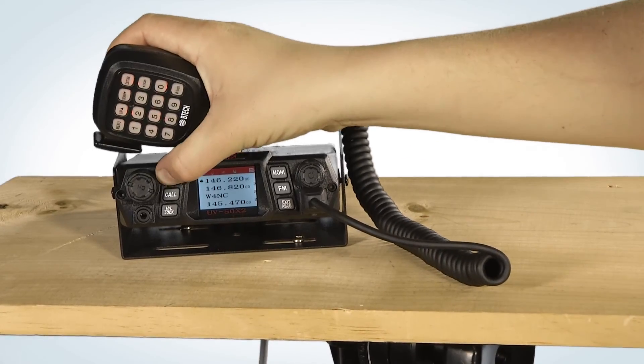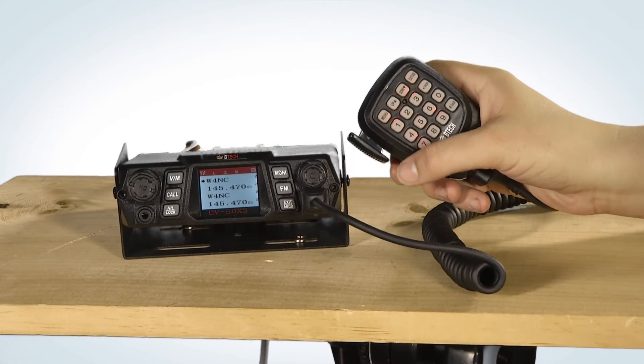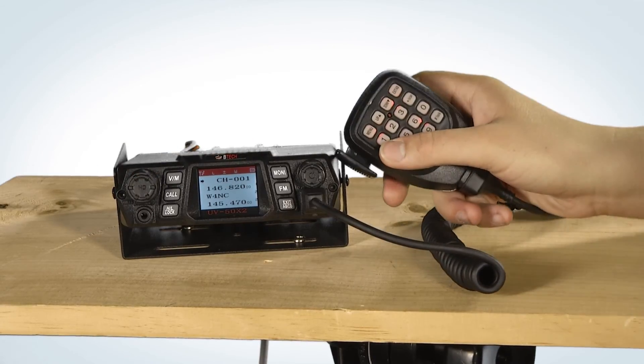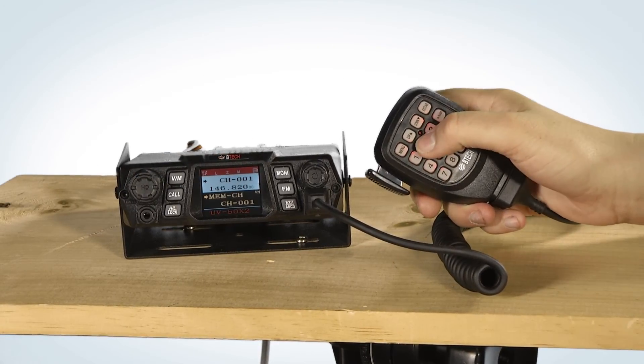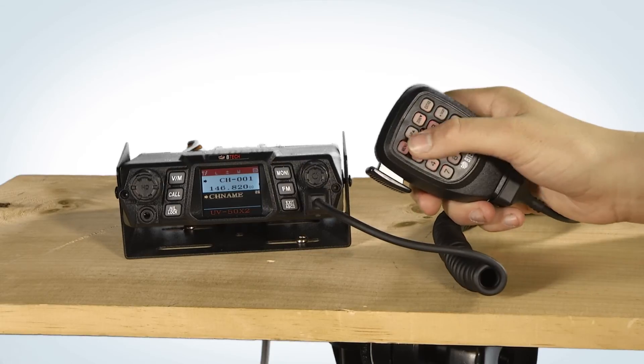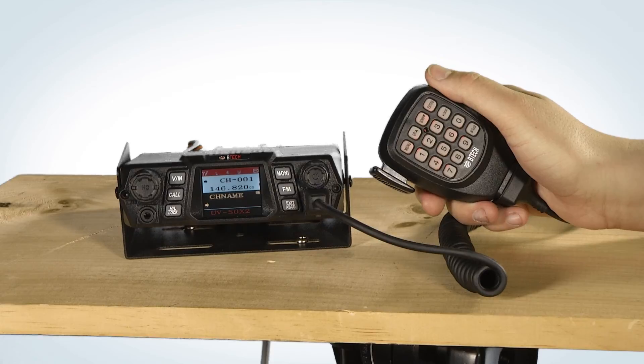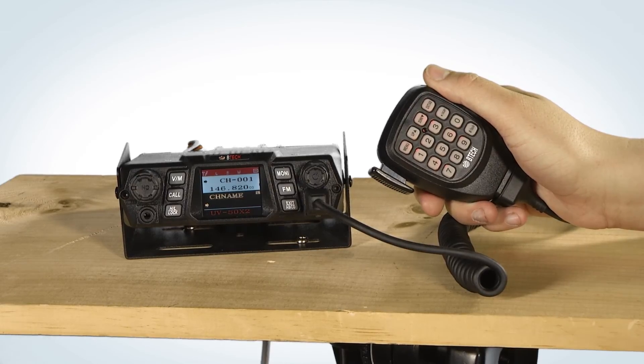You can also add a custom name by switching back to memory mode, select the desired channel, press menu, 26, menu again, and inputting your custom name by using the keypad and pound to move to the next letter.